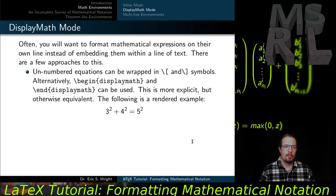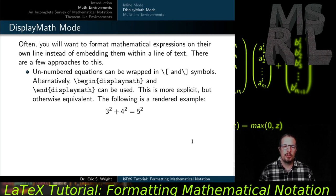Often you'll want to format mathematical expressions on their own line instead of embedding them within a line of text. Unnumbered equations can be wrapped inside of the \[ and \] symbols. Alternatively, the begin-displaymath and end-displaymath delimiters create a display math environment that works the same way — more explicit but otherwise equivalent. Using the same markup, the expression would be rendered centered on its own line, causing it to stand out more. That's an unnumbered equation.